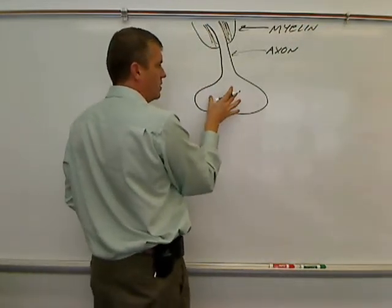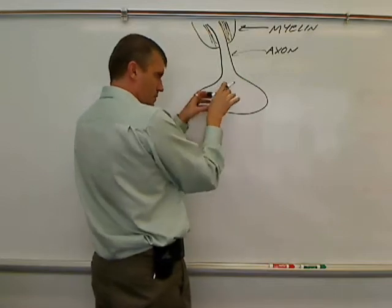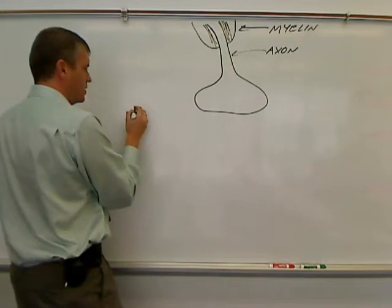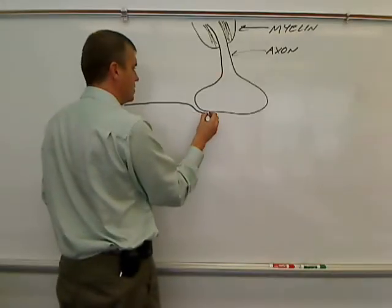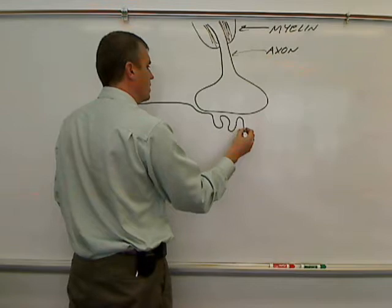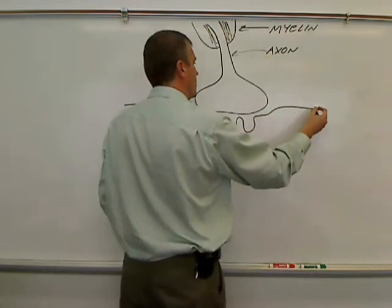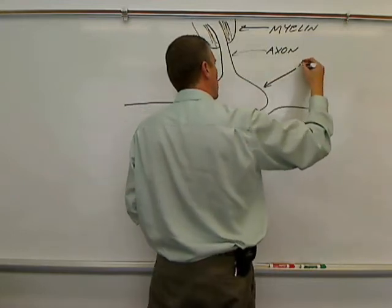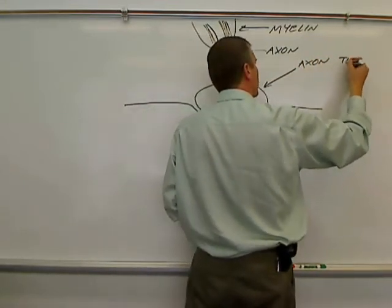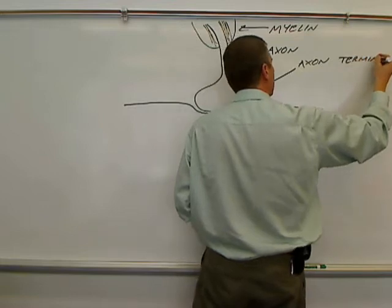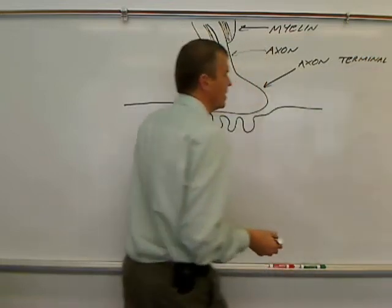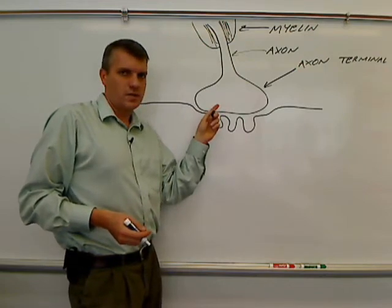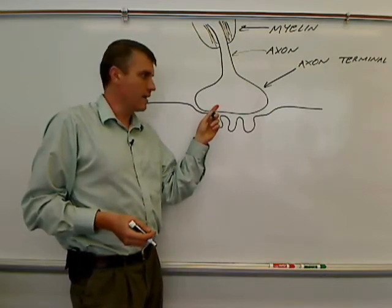This part here of the axon that comes out, gets larger, and is going to actually connect with the muscle cell, and I'll start drawing the muscle cell sarcolemma. This widened area here is called the axon terminal. The axon terminal is sometimes called the axon button, or the axon bouton.